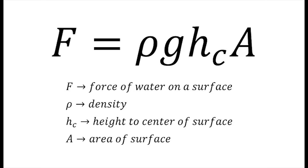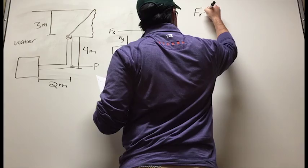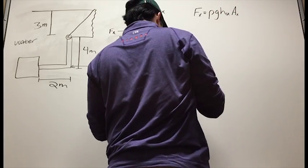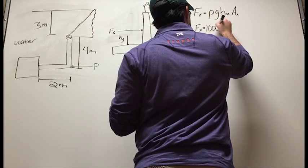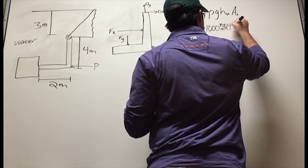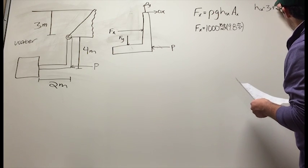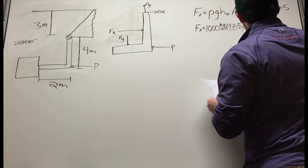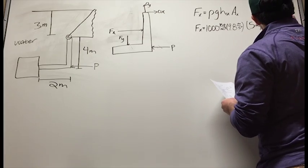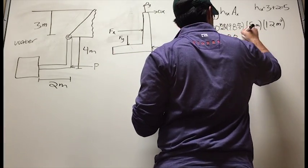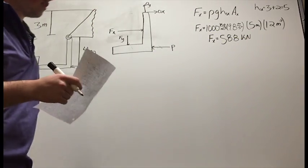We can use the following equation to find the values for F_X and F_Y. F_X equals ρgH_cX times A_X, where ρ is the density of water, g is the acceleration due to gravity, H_cX equals 5 meters, and A_X is the vertical portion area of the gate, which is 12 meters squared. F_X equals 588 kilonewtons.